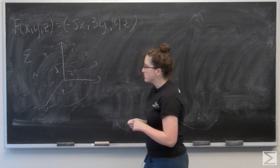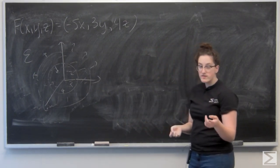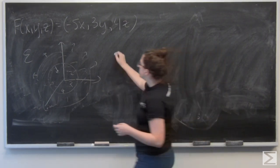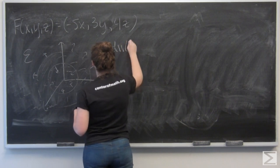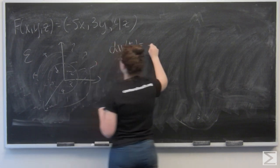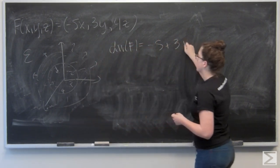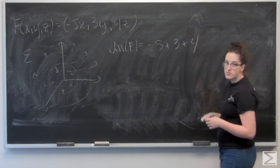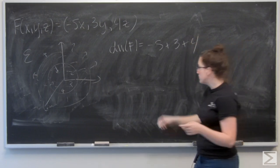And I can just do the divergence here like normal. So let's start by finding the divergence of F, which is going to be 9 of 5 plus 3 plus 4, which gives me 12.